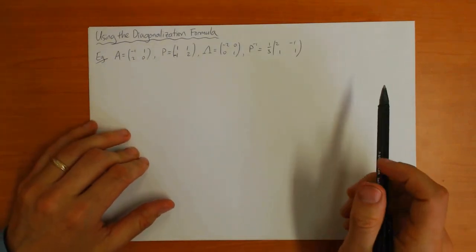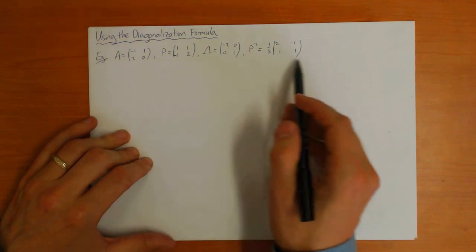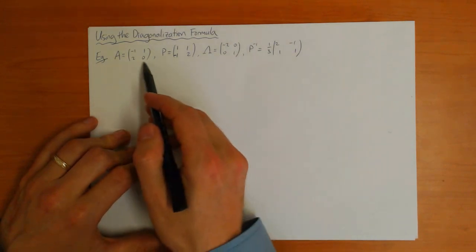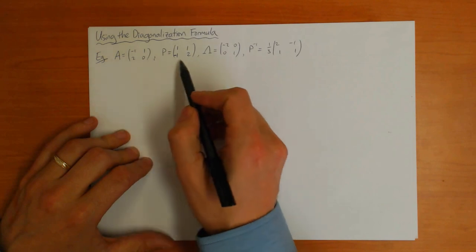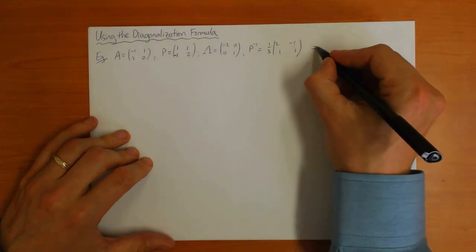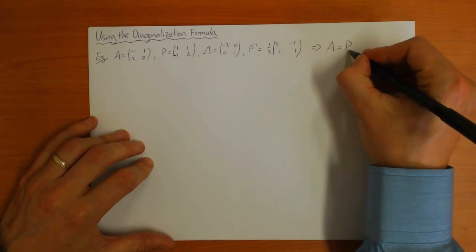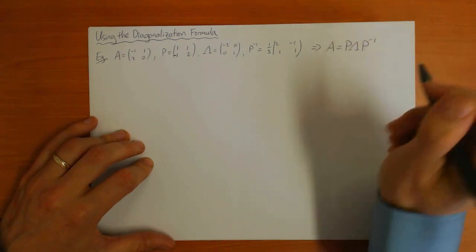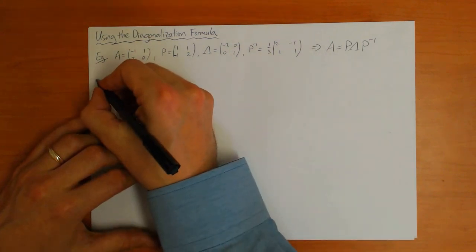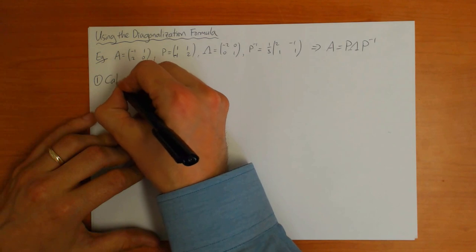Now I'm going to explain why the diagonalization formula is so useful. In this video I'm going to keep using the same example from the previous one. I've written out here the matrix A and the matrices P, Lambda, P-inverse which diagonalize it. We checked last time that A equals P times Lambda times P-inverse. I'm going to give a few examples of what you can do with this formula.